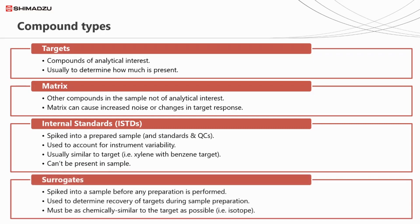The final type of compound are surrogates. These compounds are spiked into a sample before any preparation is performed, and they are usually used to determine the recovery of target analytes during the sample preparation procedure. For this to be effective, the surrogate must be as chemically similar to the target as possible. As with the internal standard, the surrogate cannot already be present in the sample, and the amount spiked needs to be known. For GCMS analysis, internal standards and surrogates are often deuterated species of the targets, as this ensures they are not already present in the sample and are extremely chemically similar.